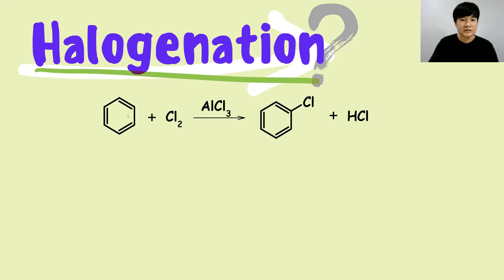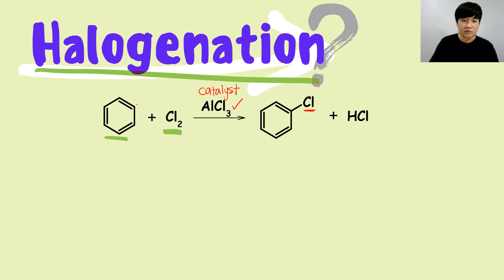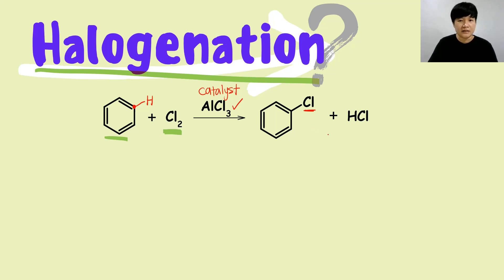For halogenation, the first example is benzene reacting with Cl2 in the presence of catalyst AlCl3. What happens is Cl substitutes the hydrogen bonded to a carbon in the benzene ring — that's why it is a substitution. The byproduct is HCl: the hydrogen comes from benzene and the extra Cl from Cl2 becomes HCl.